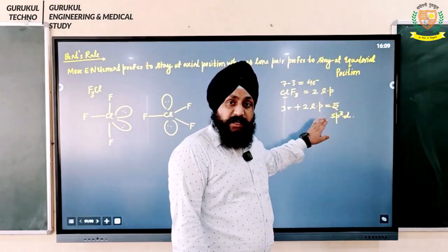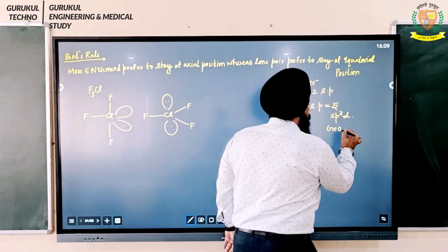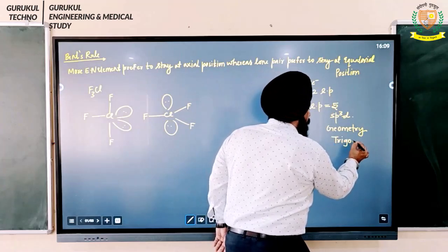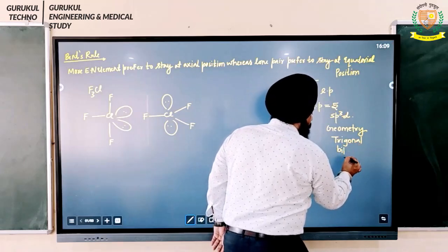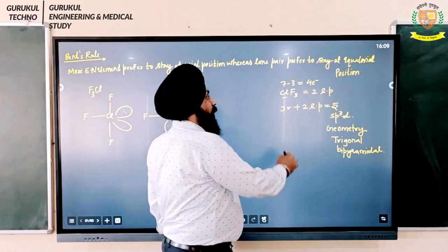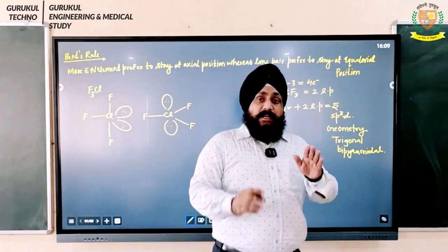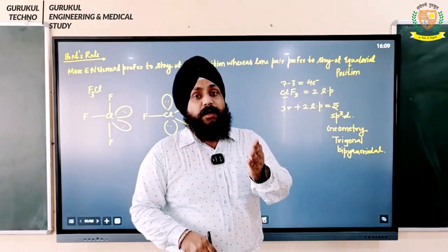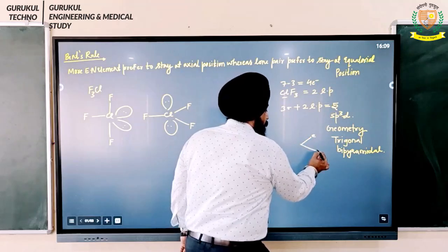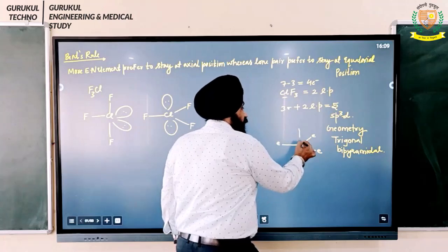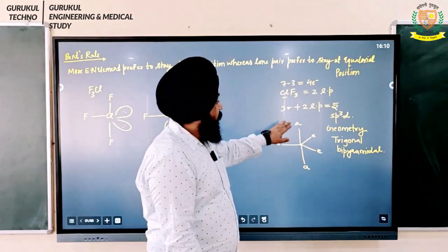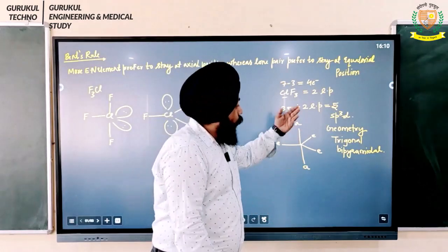Since it is SP3D hybridization, the geometry is going to be trigonal bipyramidal. In this geometry, there are three equatorial positions and two axial positions. The question now arises: where do we place the three bond pairs and where do we place the two lone pairs?